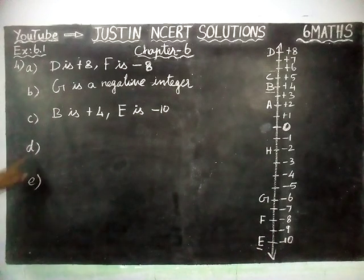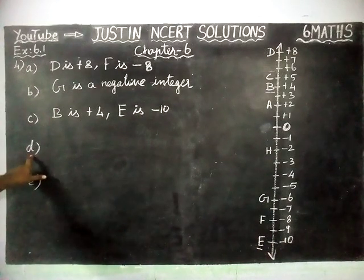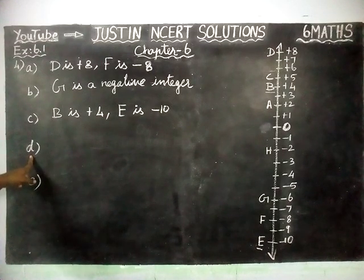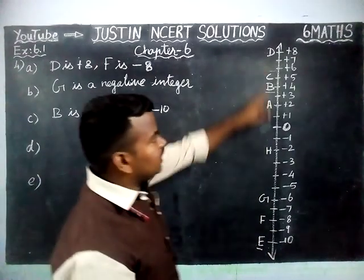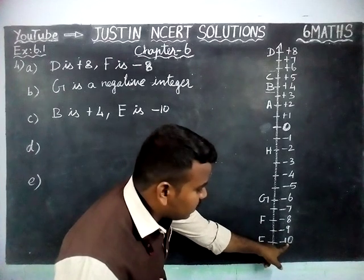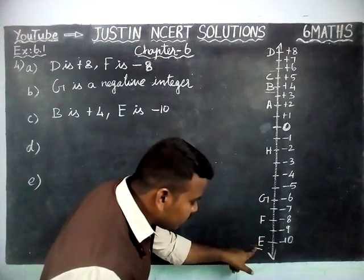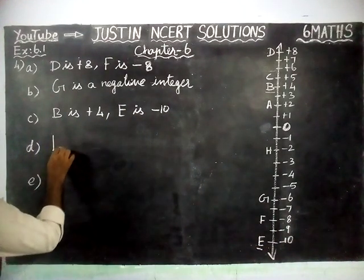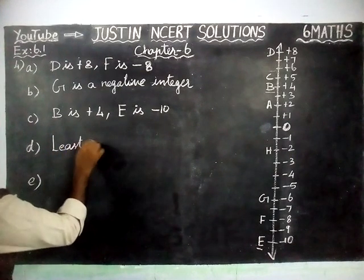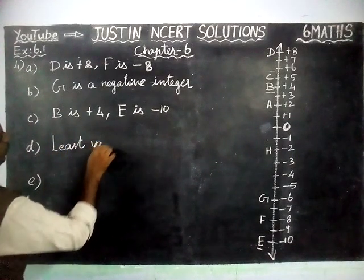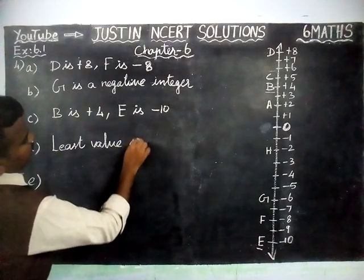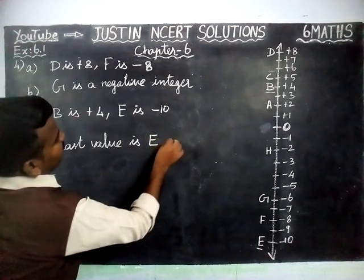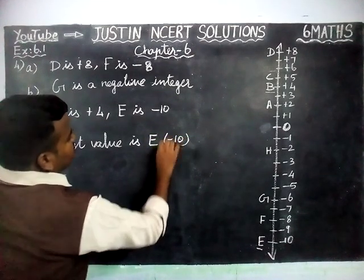Part D: which point marked on this number line has the least value? In this number line, the least value is minus 10. This minus 10 is indicating E. So the least value is E and its point is minus 10.